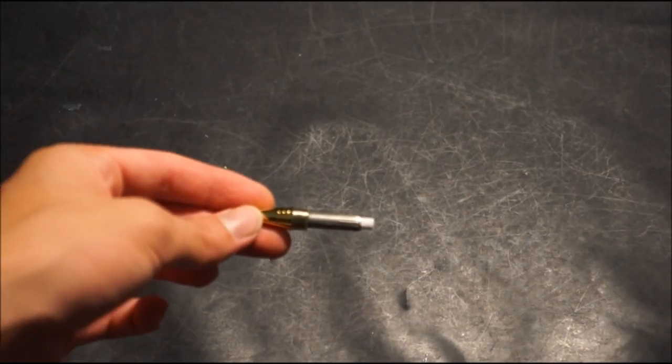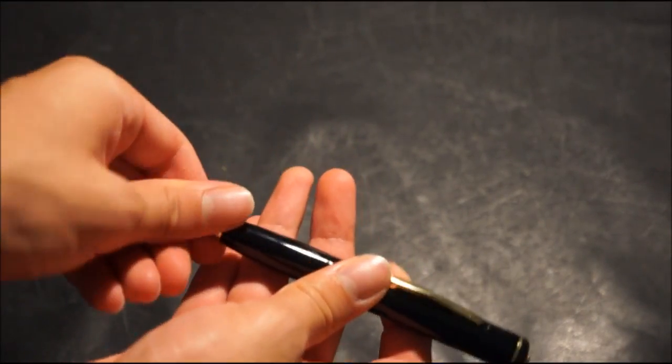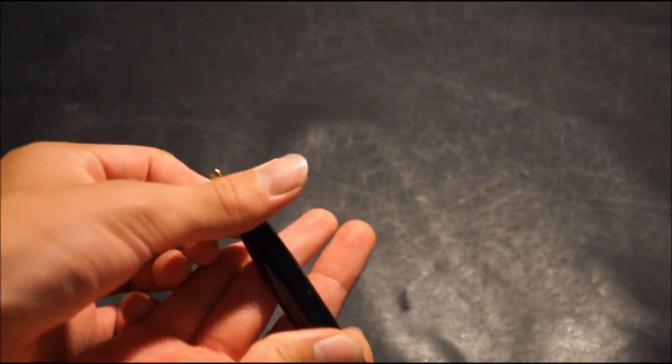Here, this is the actual ink compartment of the pen, which just screws on into the top snugly. And you just have to turn it to reveal the actual pen part of it.